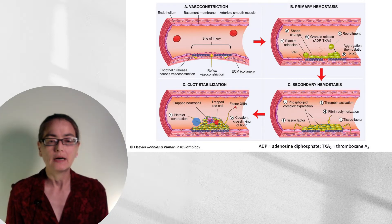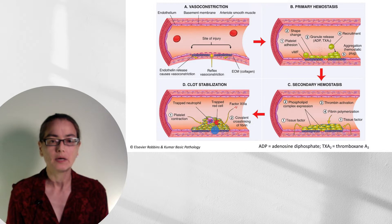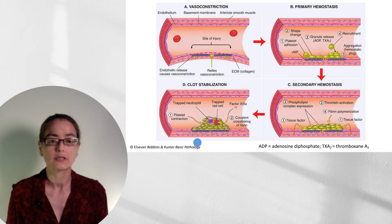The entire clot consolidates as the platelets contract. A variety of cells that are in the blood — like red cells or neutrophils — are trapped here, and you can see these histologically.